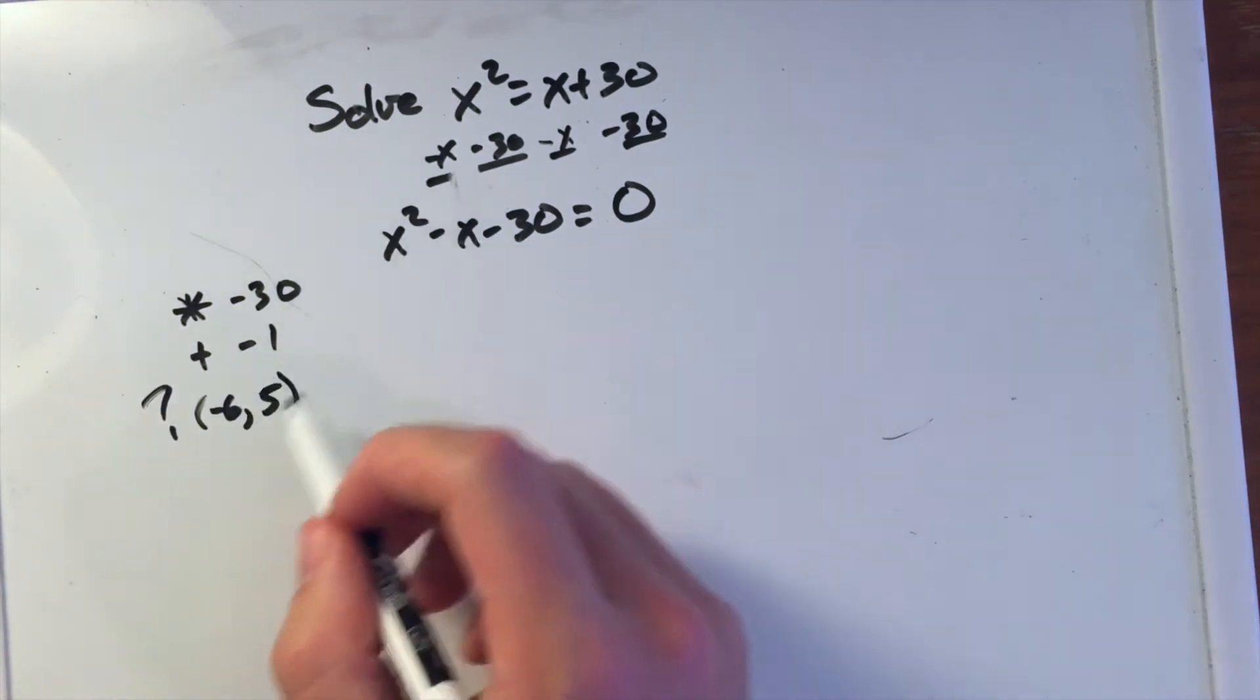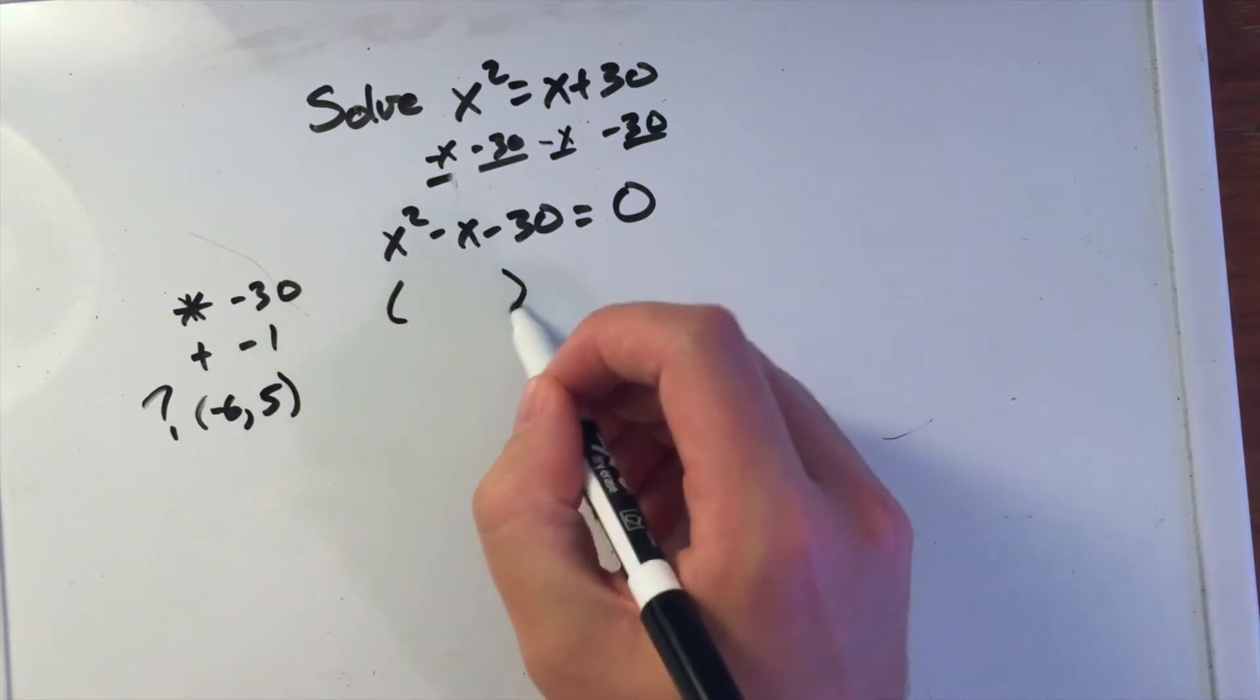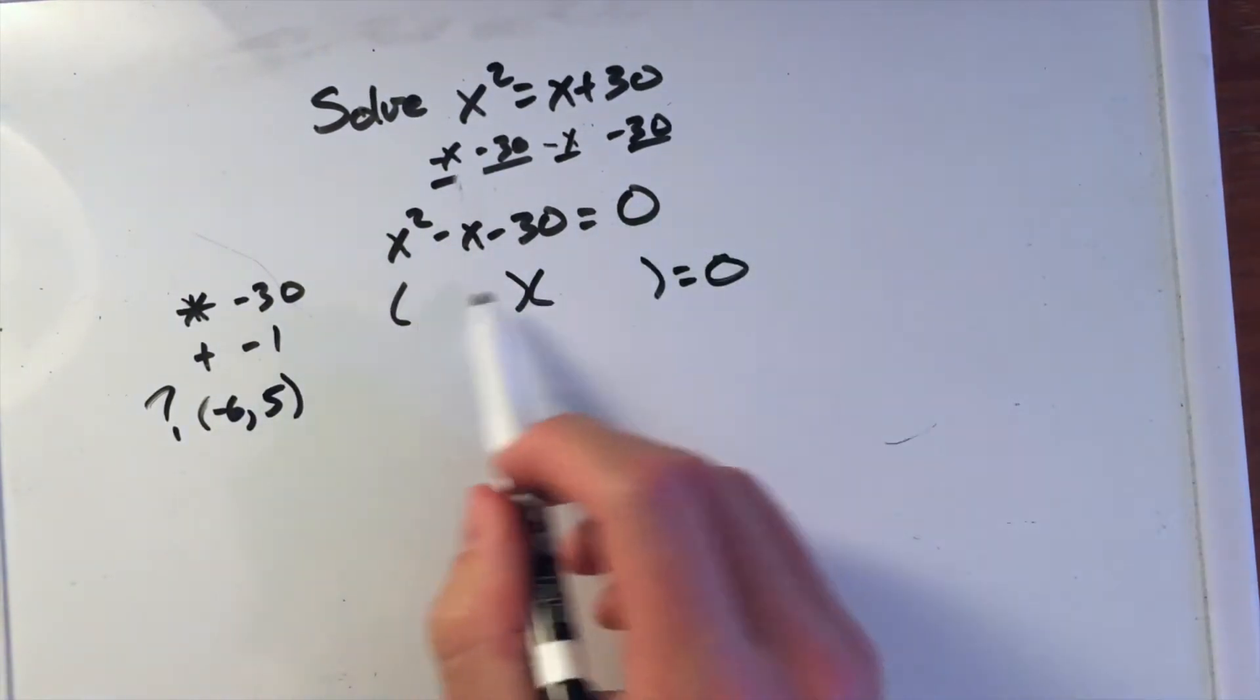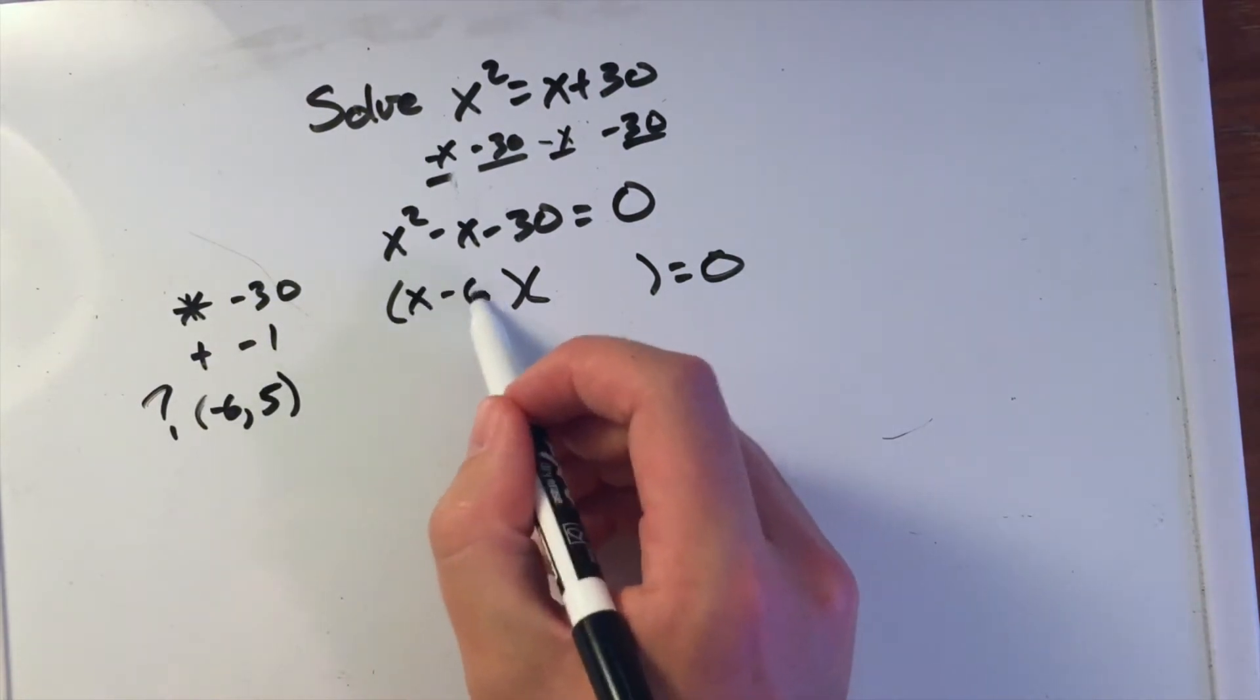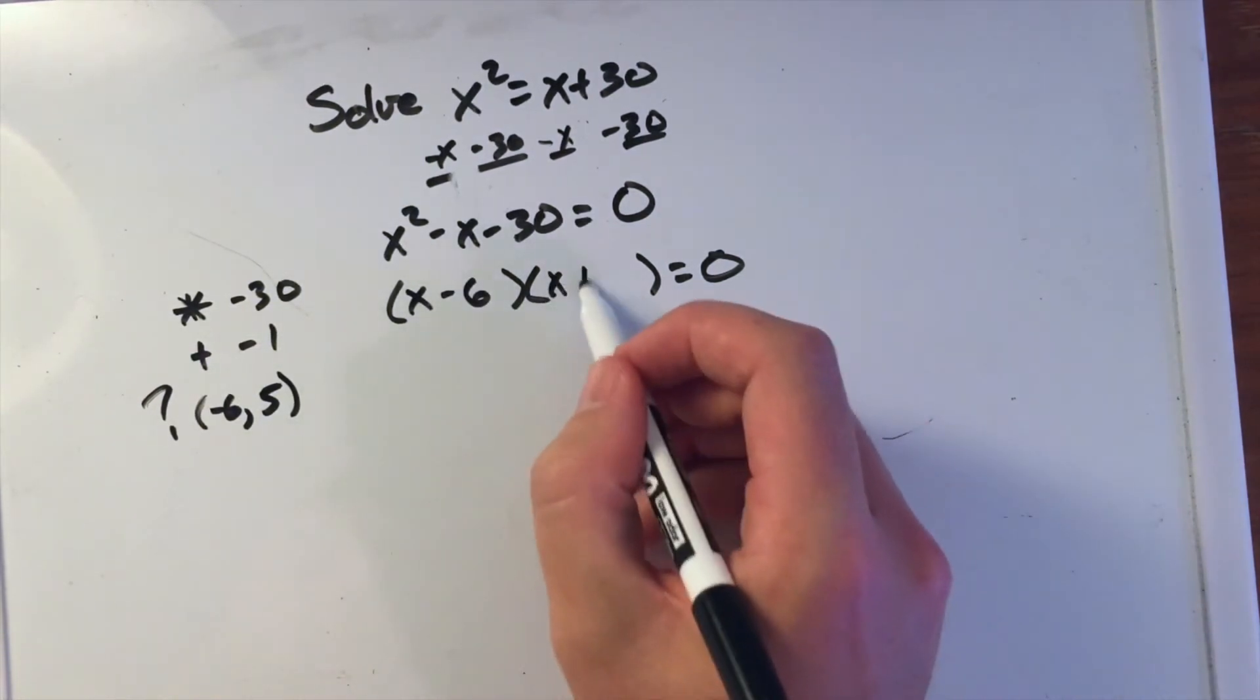We can break this apart into two sets of parentheses that are multiplied together: x minus 6 times x plus 5.